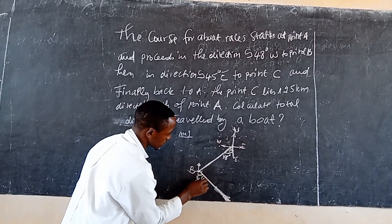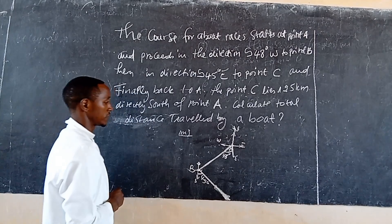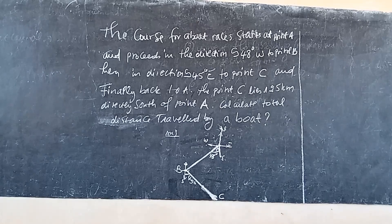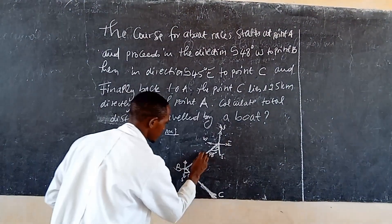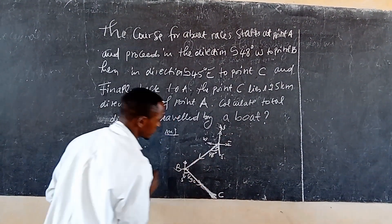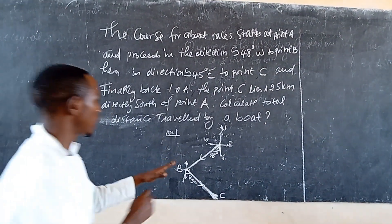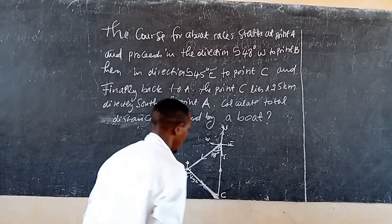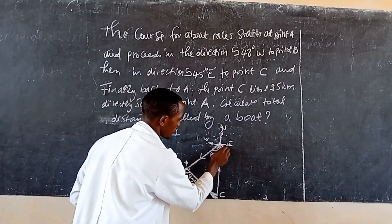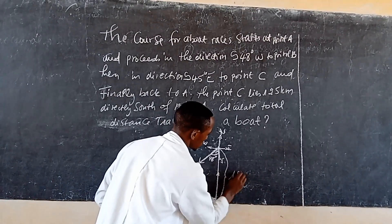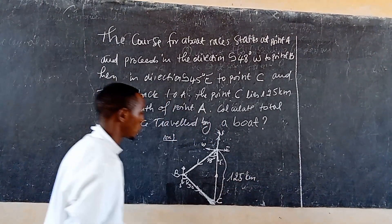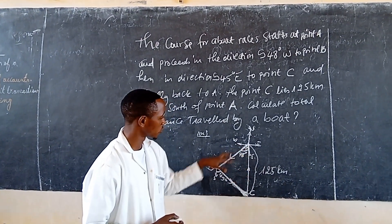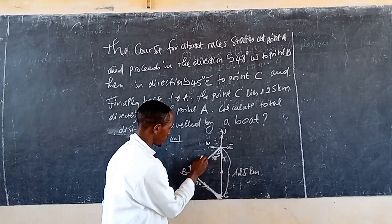Here there is an angle of 45°. After reaching point C, the boat finally goes back to point A. This is the trajectory of the track of the boat. We need to find the total trajectory or total distance.